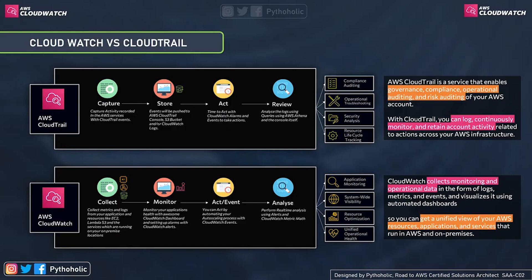On the other hand, we have AWS CloudWatch. CloudWatch collects monitoring and operational data in the form of logs, metrics, and events, and visualizes it using automated dashboards. It is a monitoring service for AWS resources and applications, whereas CloudTrail is a service that records API call events in the AWS account — and that's one of the biggest differences between them.